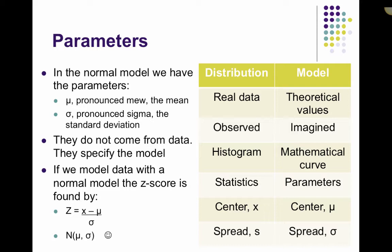And then the normal model will be denoted with a capital N, and then in parentheses it will give you the parameters, mu, sigma, so it will give you the mean, standard deviation. So whenever you see that you know you're using the normal model, and they're giving you the mean and standard deviation.